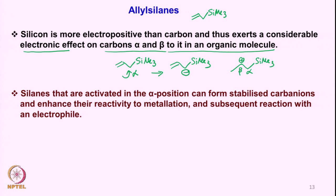Silanes which can be activated in the alpha position lead to stabilized carbanions and therefore allow an electrophile to react on that carbon. So irrespective of whether there is an allyl group or not, if you can generate the anion alpha to the silicon, then the electrophile E+ will react in this fashion to give the electrophile attached to the carbon alpha to the silicon group.